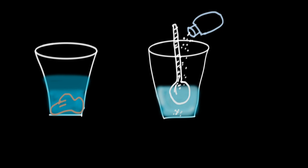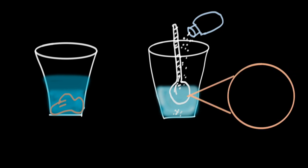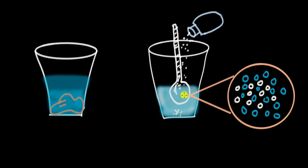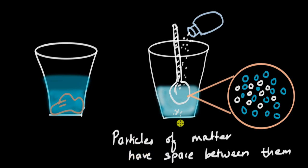To answer that, we'll have to zoom in. When we zoom in, we see water molecules — all these water molecules — and there are some spaces in between them. The salt molecules occupy the spaces between the water molecules. So when the salt dissolves, it occupies the spaces in between the water molecules and the level of the water does not rise. This really shows that particles of matter have space between them.